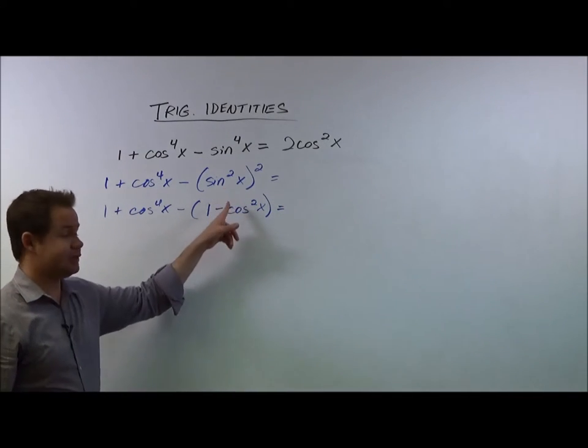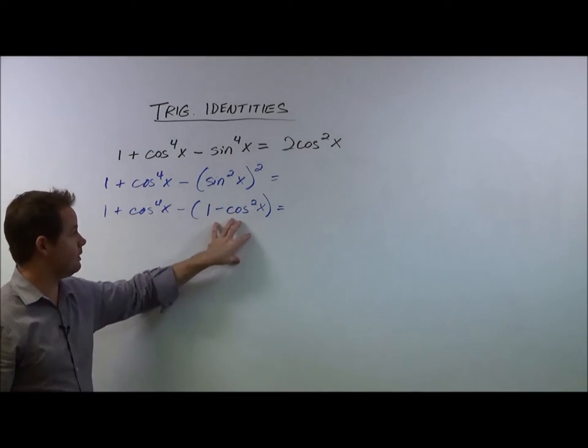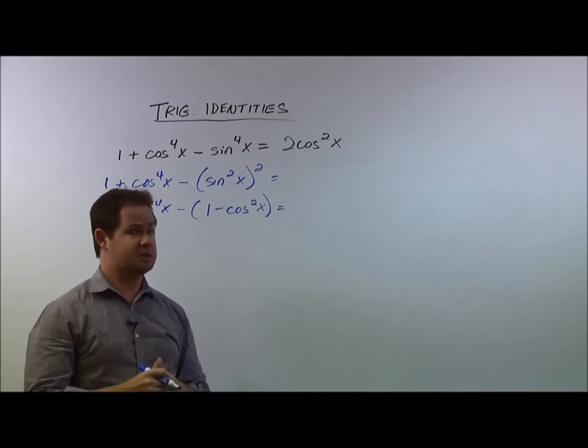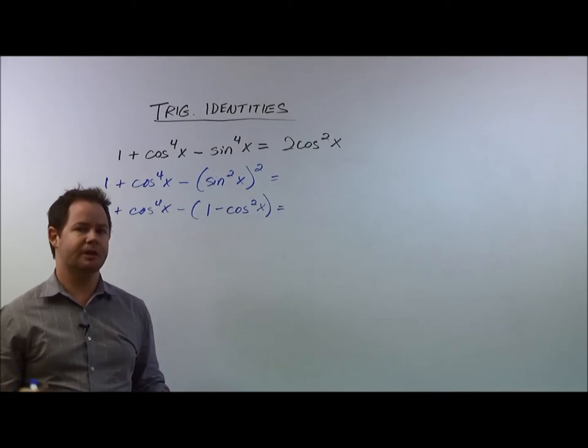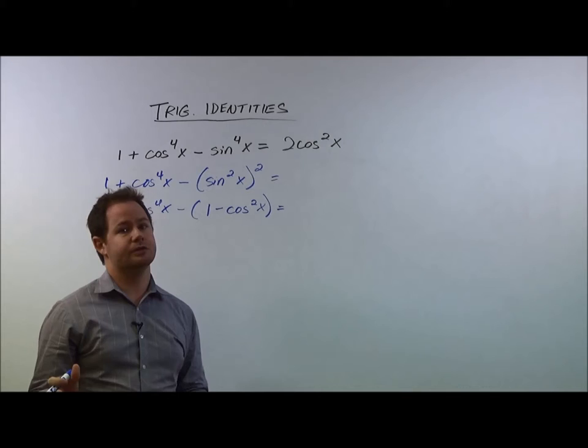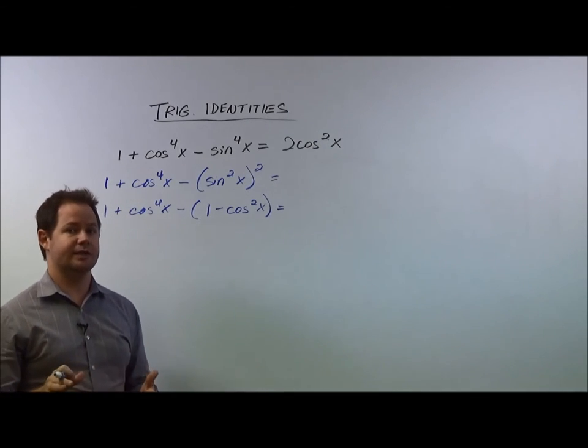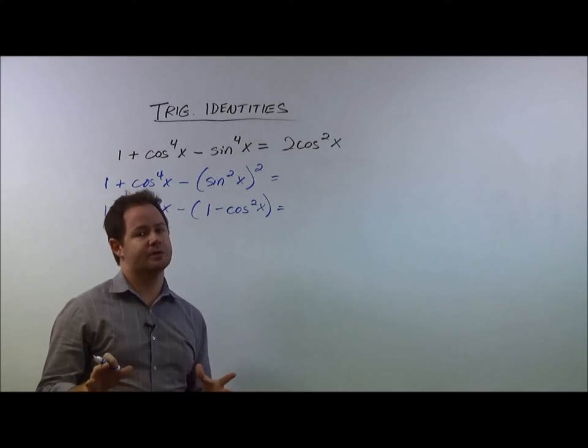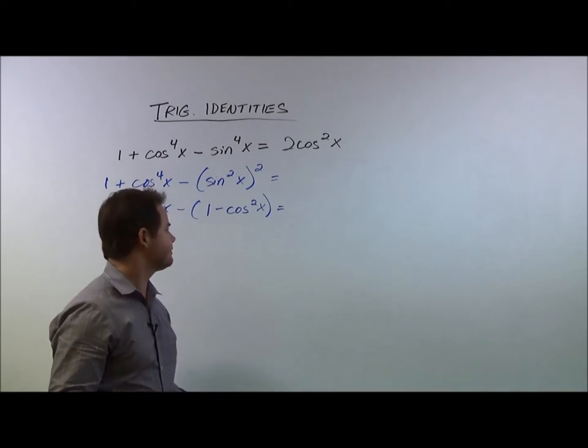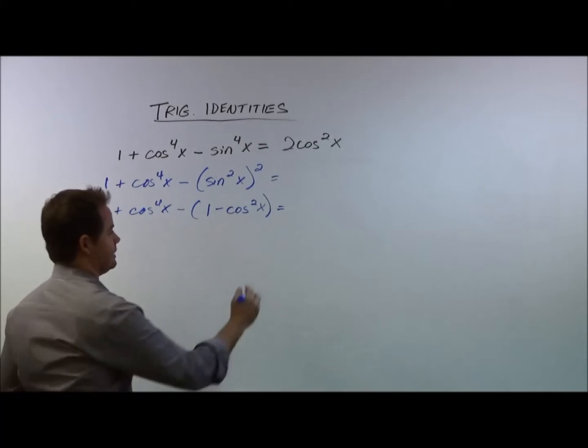So again, if this step right here where we substitute in 1 minus cosine squared in place of sine squared is something very unfamiliar to you, and you're looking at this problem saying, okay, I have no idea where that came from, then that means you just want to take a half step back and look at one of the earlier videos to make sure you understand your trig identities. You can even download a form from our site just to make sure you're comfortable with where these identities come from. But assuming you've been exposed to that, then we'll go ahead and continue.